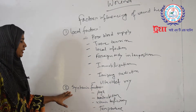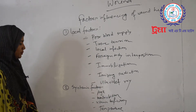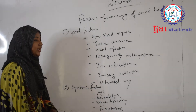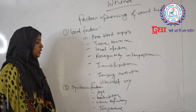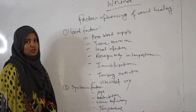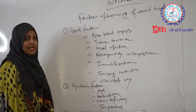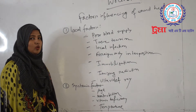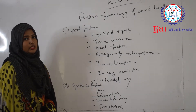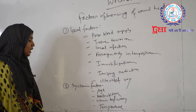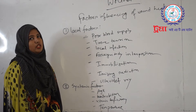Systemic factors include age, malnutrition, vitamin deficiency, and temperature. Regarding age: in old age, wound healing will be slow; in early age, wound healing will be rapid. Malnutrition causes wound healing to be slow. Vitamin deficiency also causes wound healing to be slow. High temperature causes wound healing to be slow.